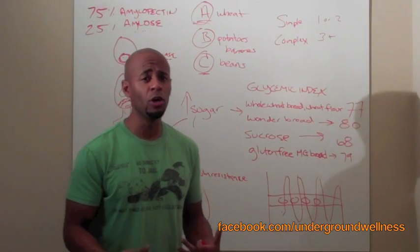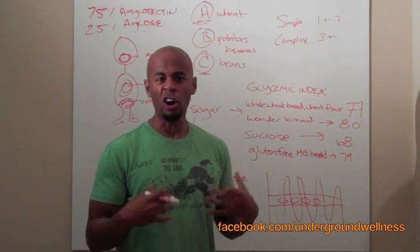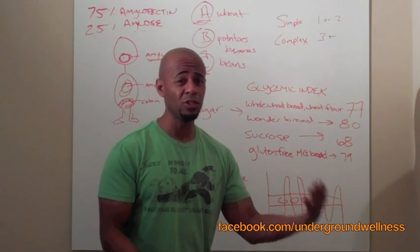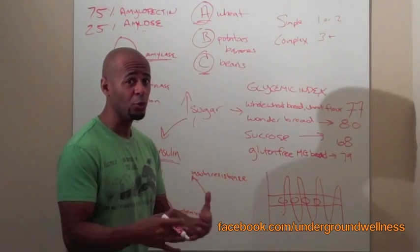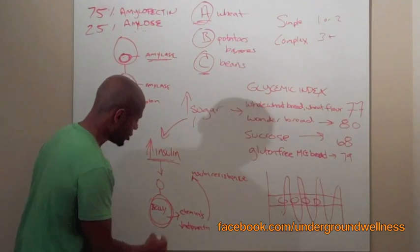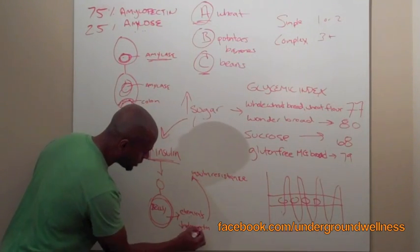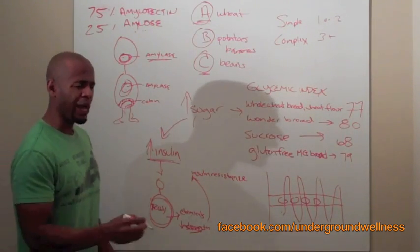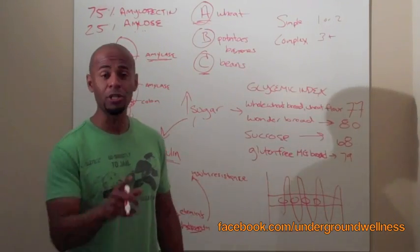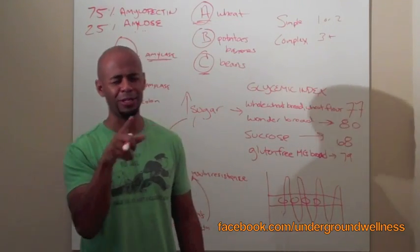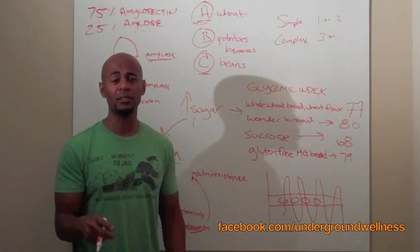Now this belly fat makes inflammatory chemicals. Most people don't know that your fat stores are an endocrine gland. They're just like your adrenals, just like your pancreas. They make hormones. They make chemicals. So your fat is actually doing stuff. It's just not hanging out there. And so these chemicals, as well as something called adiponectin.